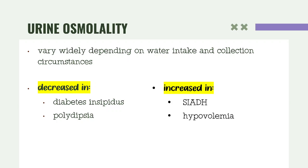Now let's look at urine osmolality. Earlier we discussed plasma osmolality; now it's urine. Urine osmolality varies widely depending on water intake and collection circumstances. It is decreased in cases of diabetes insipidus or polydipsia, and increased in SIADH or hypovolemia. Let's look at diabetes insipidus and SIADH and relate them to urine osmolality.